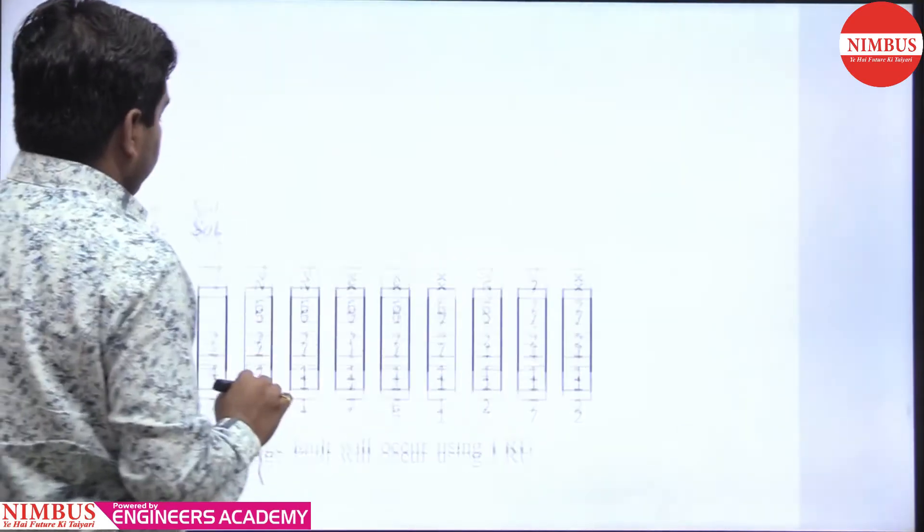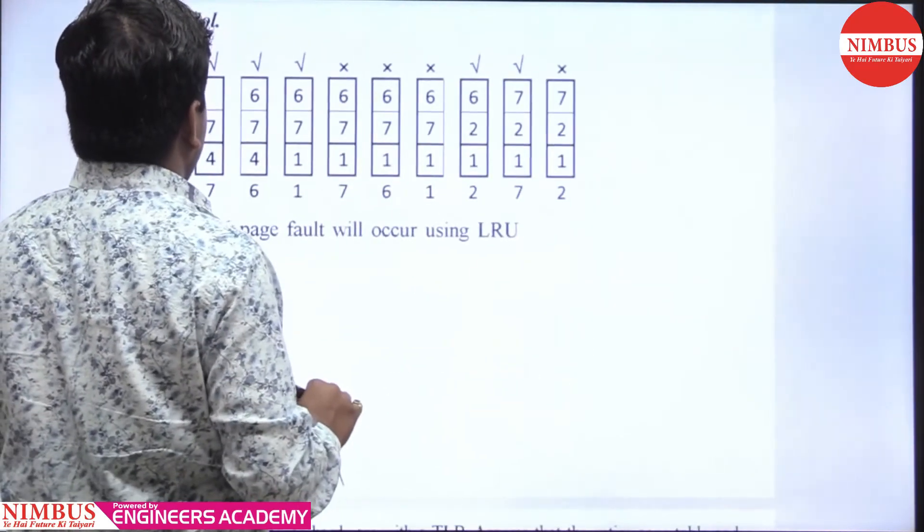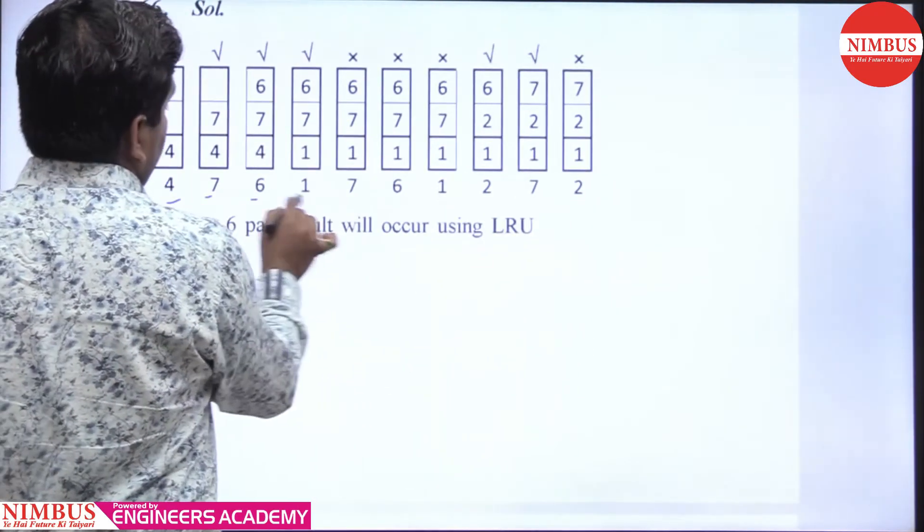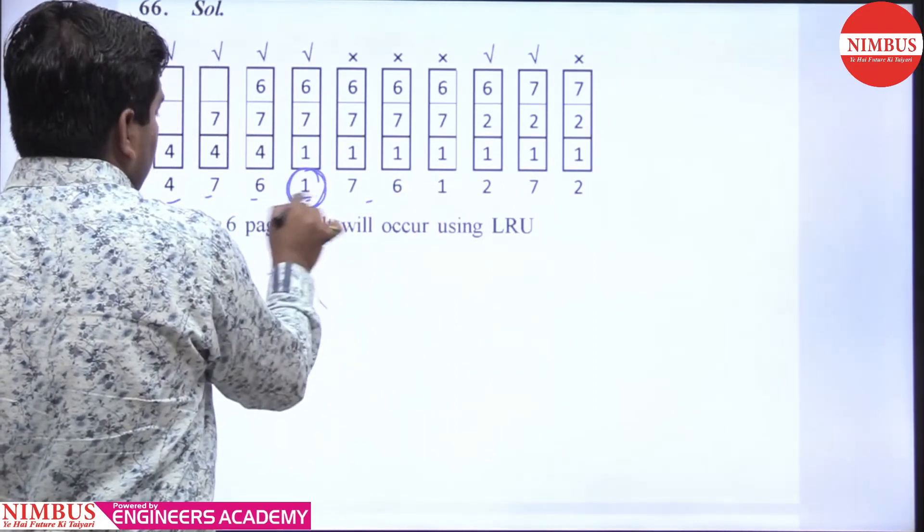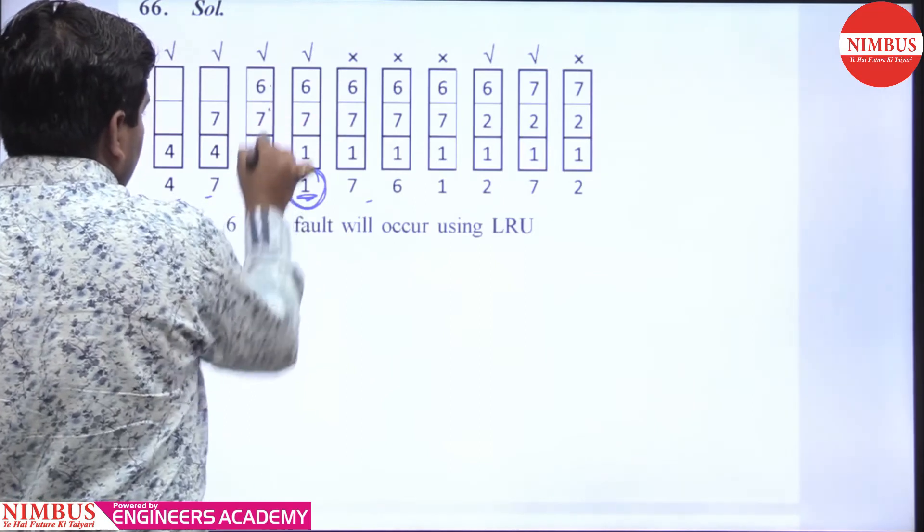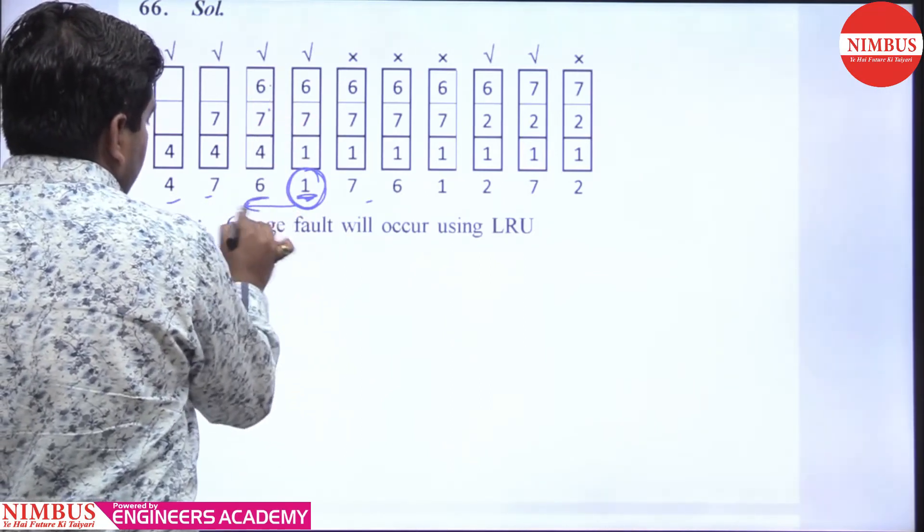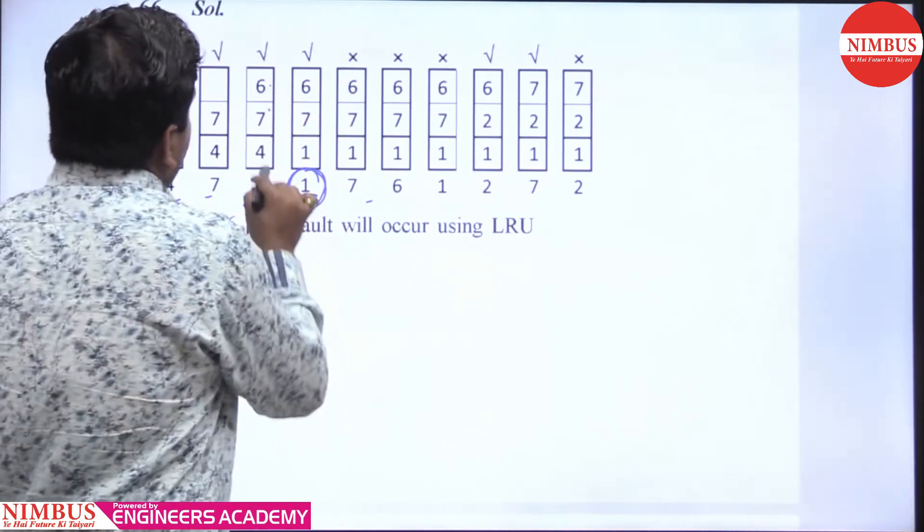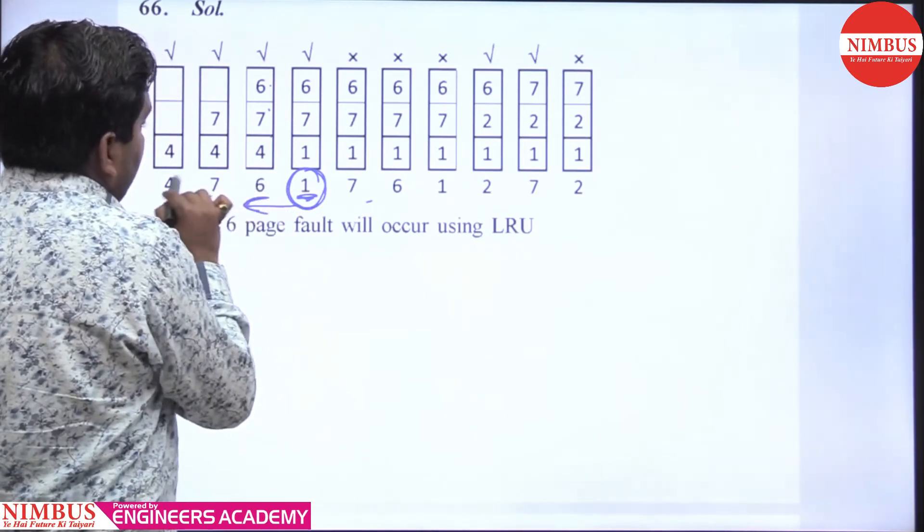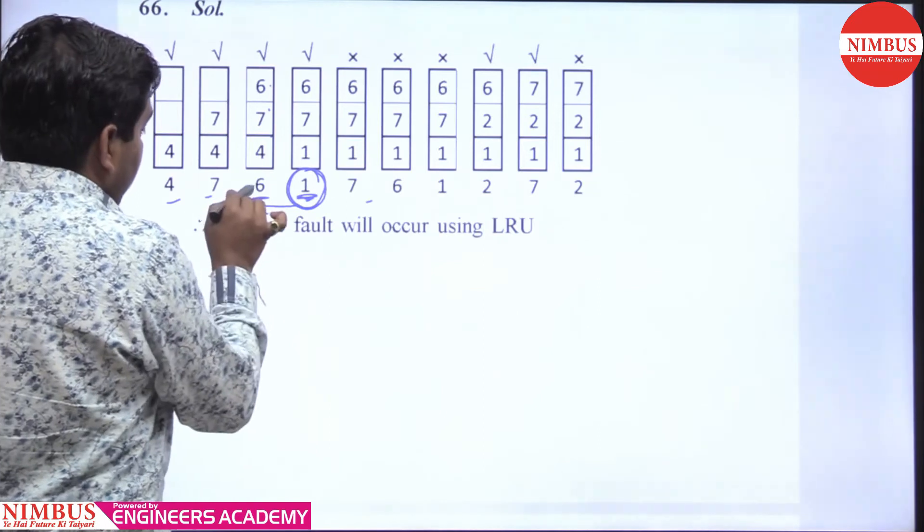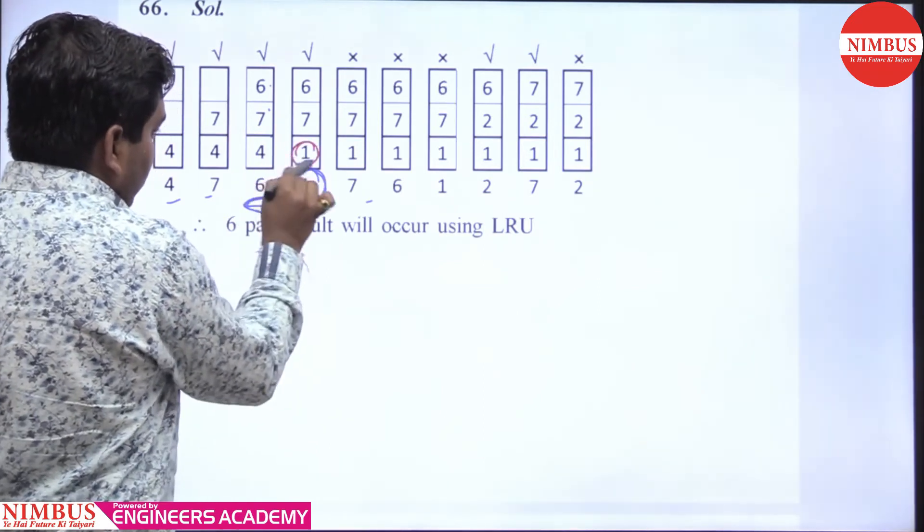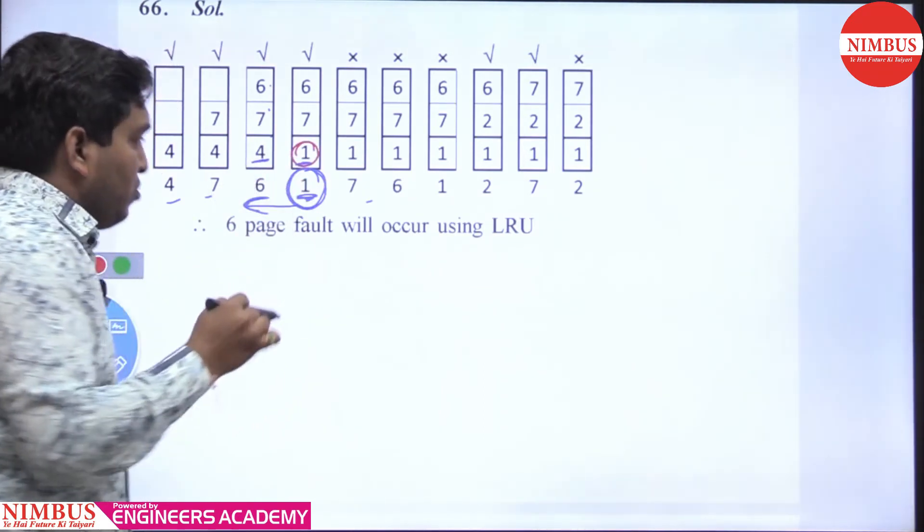Here you can see when we apply LRU, when a page fault occurs, we look in the reverse direction - which one is used in reverse direction. First 6, then 7, then 4. That's why we replace 4 with 1. Clear, that is the concept.